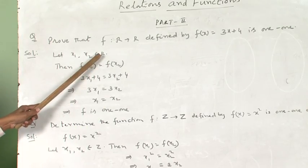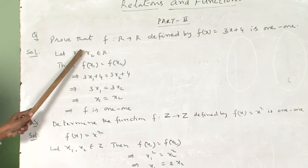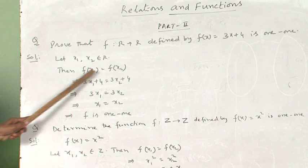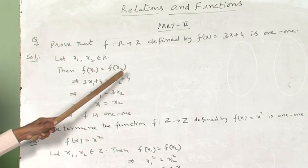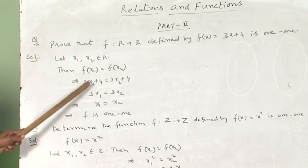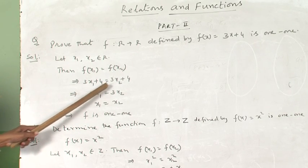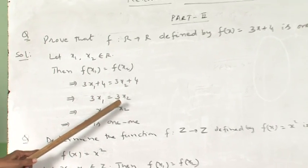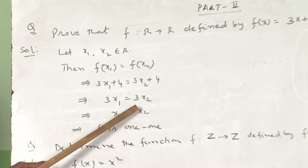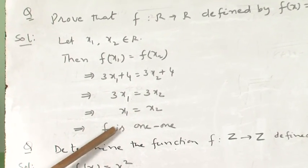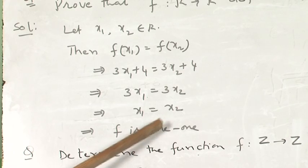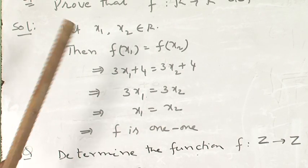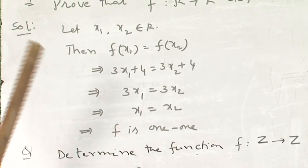Let X1, X2 belong to R. By definition, f(X1) = f(X2) gives 3X1 + 4 = 3X2 + 4, which implies 3X1 = 3X2, and therefore X1 = X2. Hence f is a one-one function.